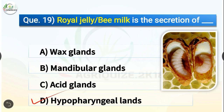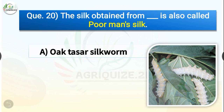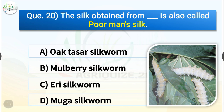Question number twenty: The silk obtained from dash is also called poor man's silk. The options are oak tassar silkworm, mulberry silkworm, eri silkworm, or muga silkworm. The correct answer is option C — eri silkworm. The silk obtained from eri silkworm is also called poor man's silk.